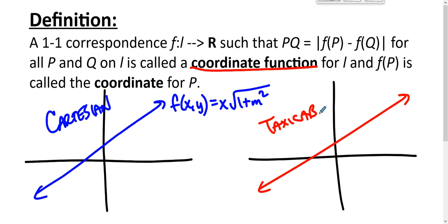The taxi cab metric was the one where you just add the horizontal distance and add the vertical distance.